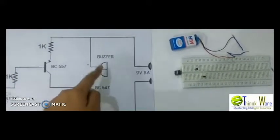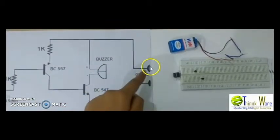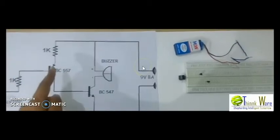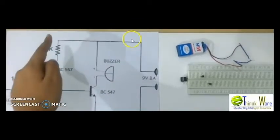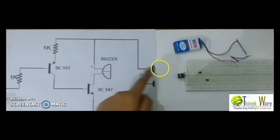The positive terminal of the buzzer goes to the 9V battery positive terminal. Now in BC557, the emitter through a 1K resistor goes to the positive terminal of the battery.